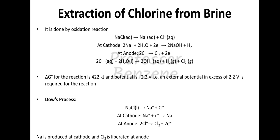In the Down's process, NaCl liquid breaks into Na⁺ and Cl⁻. At the cathode, Na⁺ accepts an electron to form sodium metal, and at the anode, 2Cl⁻ lose 2 electrons to form Cl₂. So sodium is produced at the cathode and Cl₂ is liberated at the anode in the Down's process, which is also used for extraction of chlorine from brine.